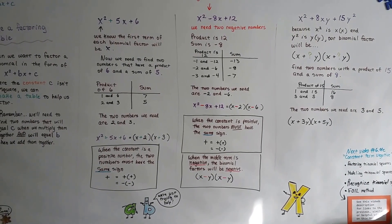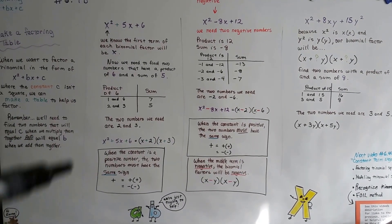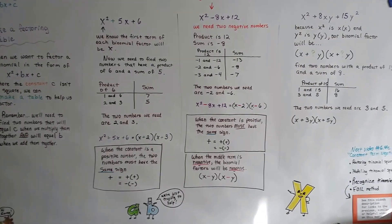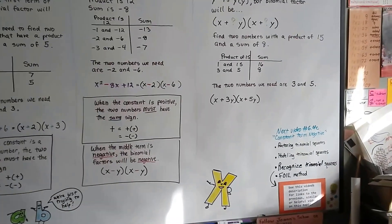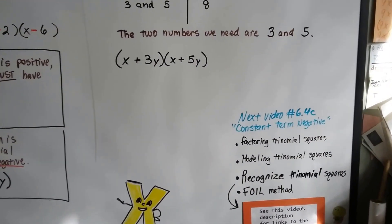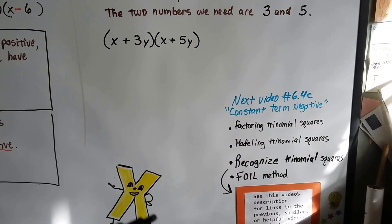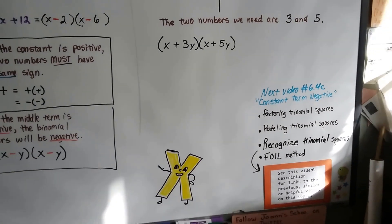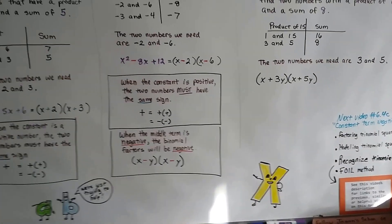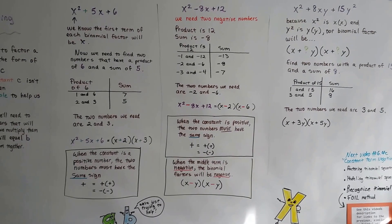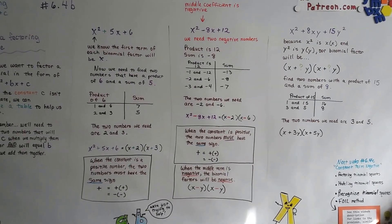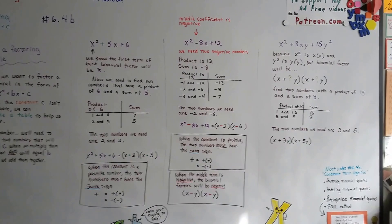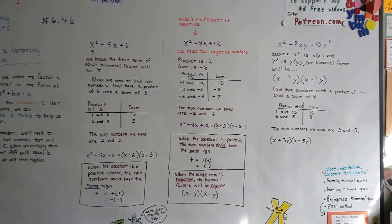6.4c, is going to be about the constant term negative. We're going to talk about what happens when this last one is a negative. And if you want to know about factoring trinomial squares or modeling trinomial squares or recognizing them, check out the description in this video. There's going to be links to the last one we just did too, with the positive constant. I'll see you next video. Bye.